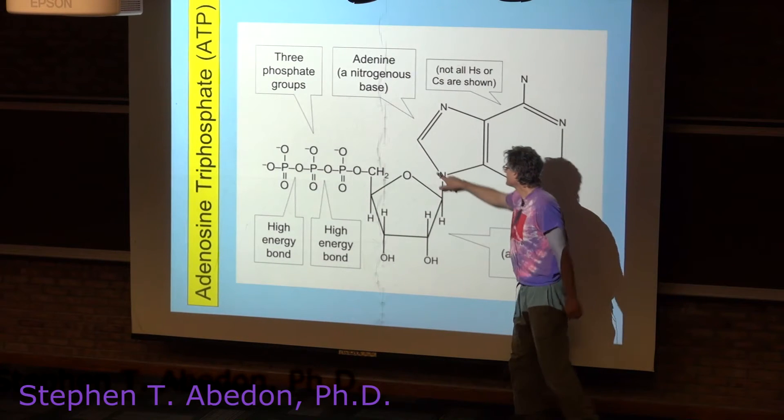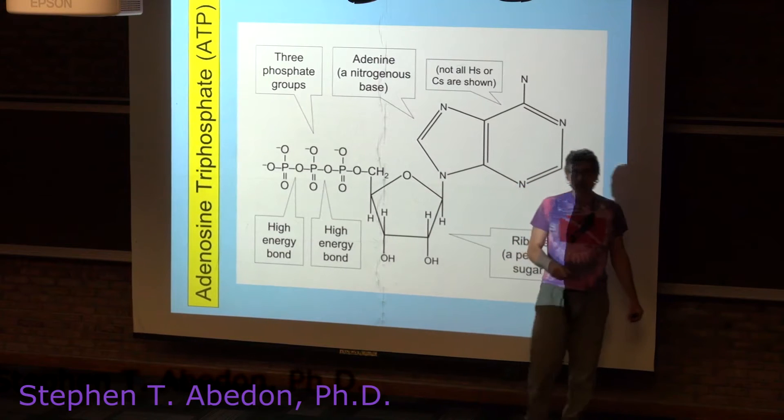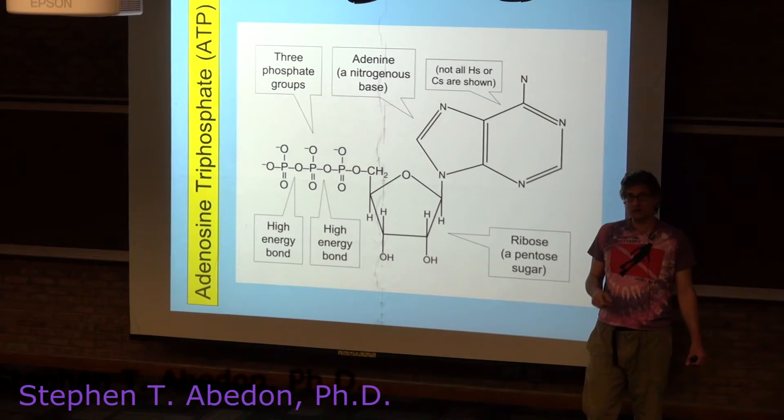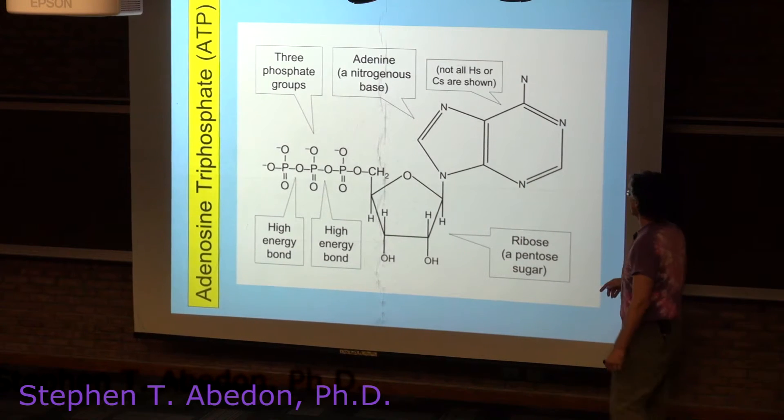Ribose at one end has a nitrogenous base attached to it, and in ATP, that nitrogenous base is called adenine.